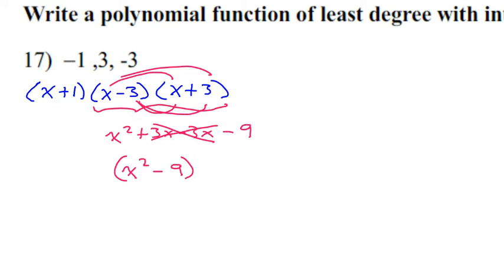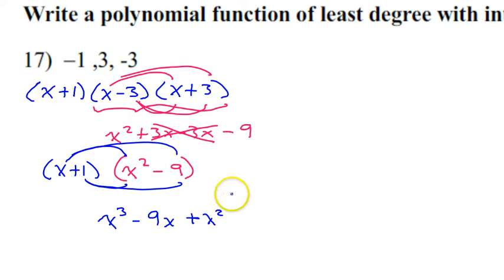Meanwhile, I still have the x plus 1, which I will bring down. So now I need to multiply these together. Again, I'm going to double distribute. If I distribute the x, that'll give me x to the third power minus 9x. Now if I distribute the 1, that's going to give me x squared minus 9.